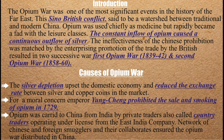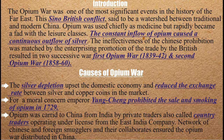Opium was originally used as a medicine, but it became a fashion among the leisure classes. People became addicted to it, and because of this addiction, their physical and mental health deteriorated. The emperor banned it. A second issue was that opium was being paid for in silver, causing a continuous outflow of silver from China, which deteriorated their economy.